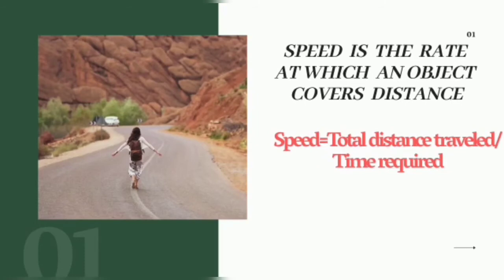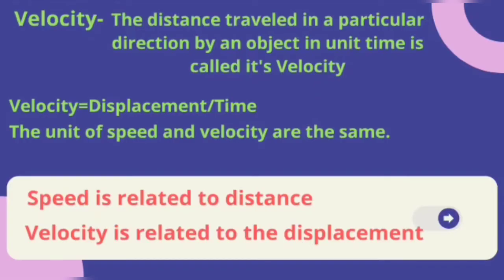Speed is the rate at which an object covers distance. Speed is equal to total distance traveled divided by time required.